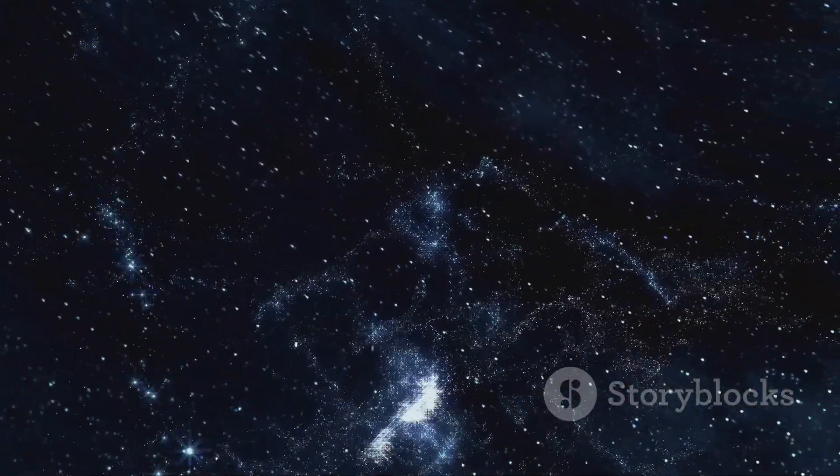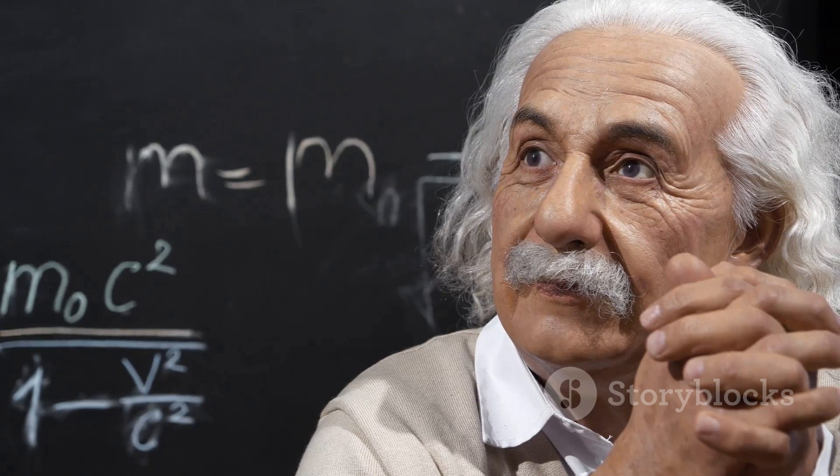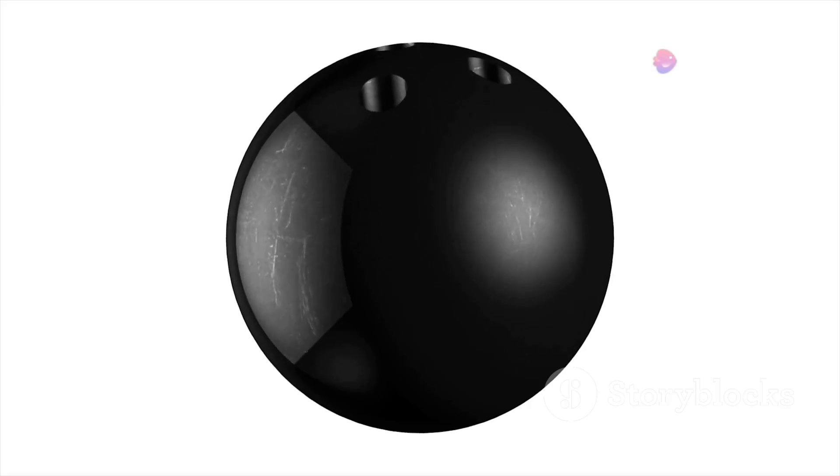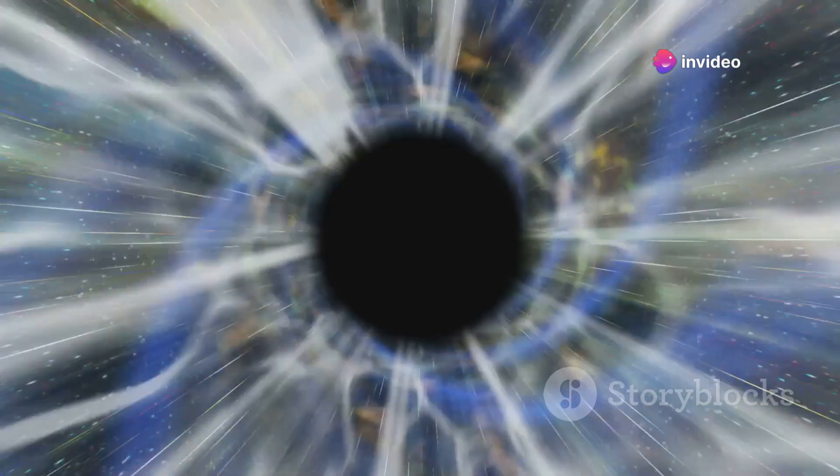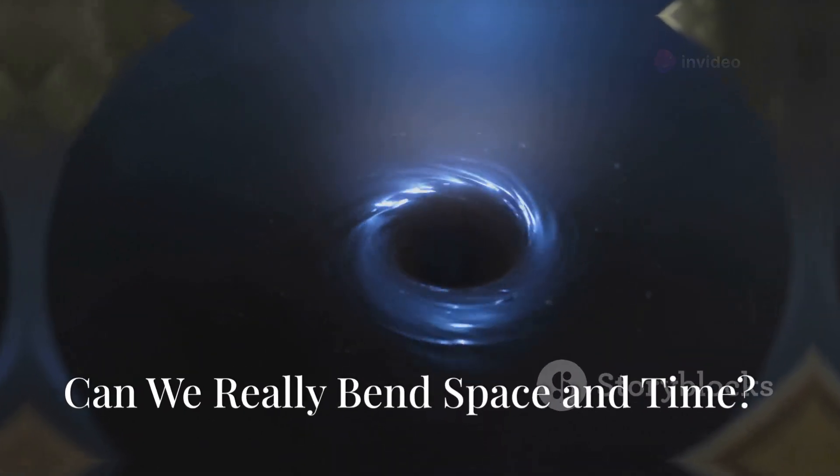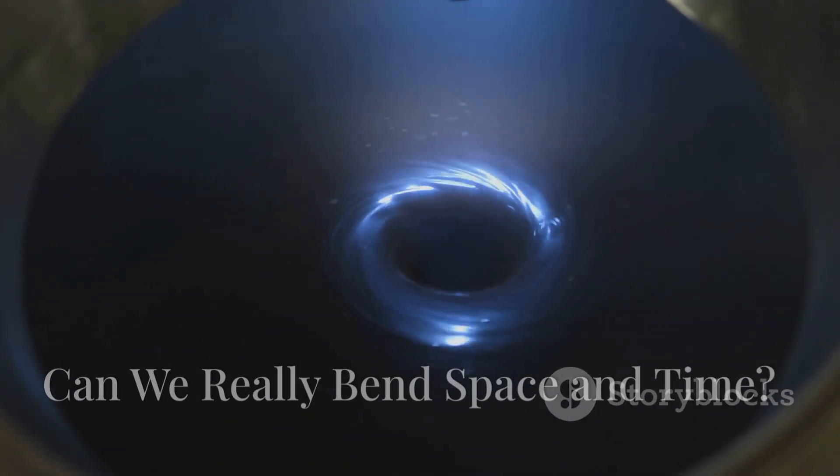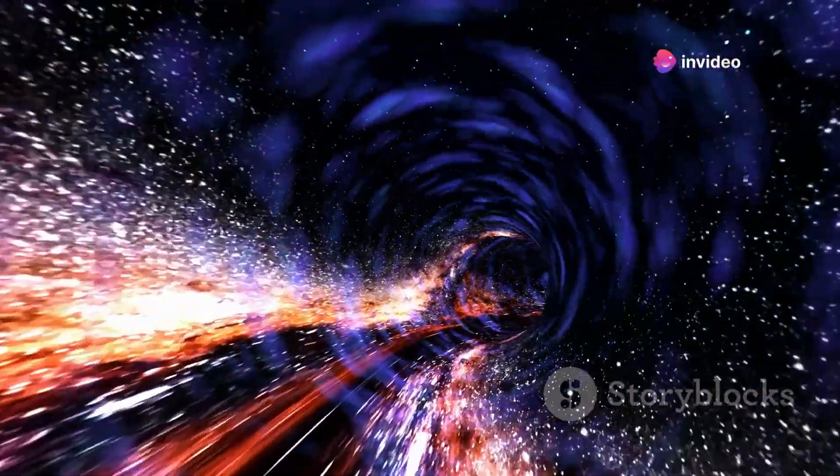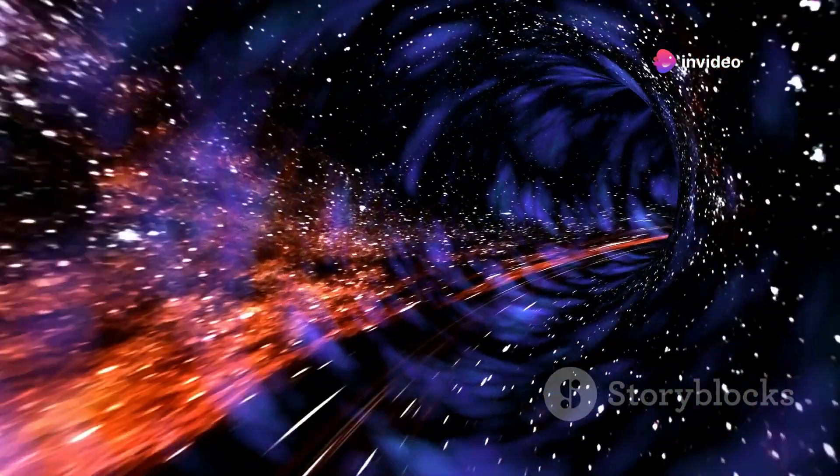To understand wormholes, we must first delve into the mind-bending world of Albert Einstein's theory of general relativity. Einstein revolutionized our understanding of gravity by proposing that it's not a force acting at a distance, but rather a curvature of space-time caused by massive objects. Imagine a bowling ball placed on a trampoline. The ball creates a dip in the fabric, much like a star or planet warps the fabric of space-time. Einstein's theory suggests that space-time can be bent, stretched, and even folded. This bending of space-time is what gives rise to the concept of wormholes.